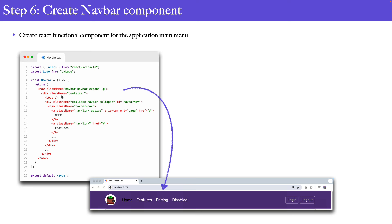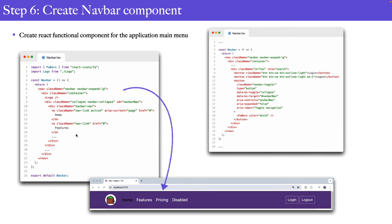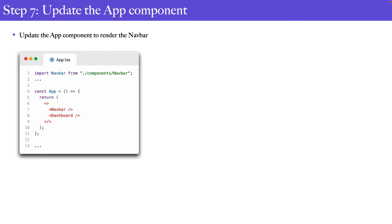Inside the navbar component, we add Bootstrap classes for the navbar and display links for home, features, pricing, and disabled. We also create login and logout buttons using Bootstrap classes, and export this as a default component. Finally, in the app component, we render the navbar component, which in turn renders the logo component.